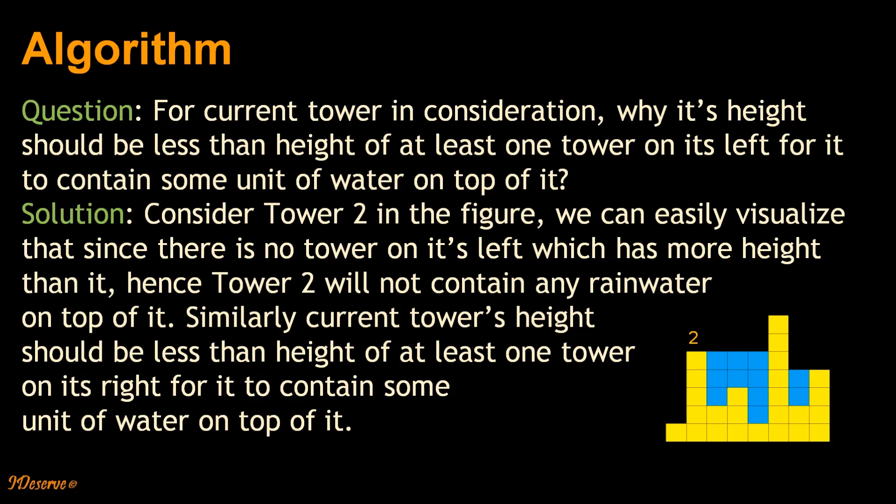Similarly, current tower's height should be less than the height of at least one tower on its right for it to contain some unit of water on top of it.